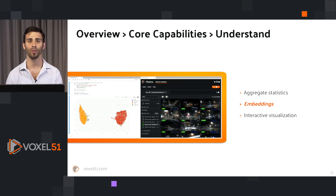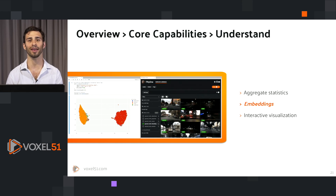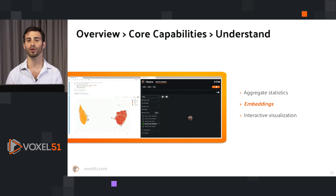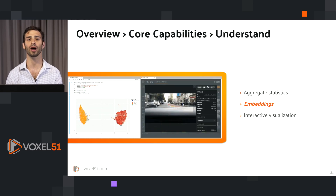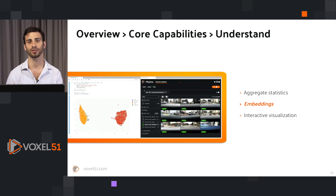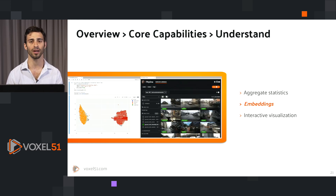At this point, we could zoom into our embeddings plot and lasso select those particular examples to understand what's going on with them. Maybe the daytime images were just dark — perhaps there was a lot of cloud coverage that day and the image looked like a nighttime image. Using this information, we could go and correct those mistakes in our data or account for those edge cases in our model.